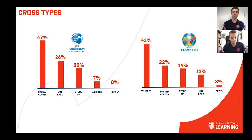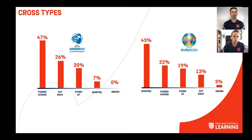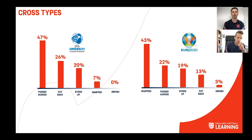On this slide we can observe the types of crosses that assisted open play goals from the tournaments. Our aim is not just to compare and contrast the two graphs — we want to pose a question back to the audience: how might this graph look with the teams and players you coach, and why? In the under-21s, pass-to-cross crosses — a lateral ball across the floor to pick out a teammate — made up half of crossing assists, with cutbacks second most common. In the seniors, whipped crosses were dominant at 43%, with pass-to-cross second.